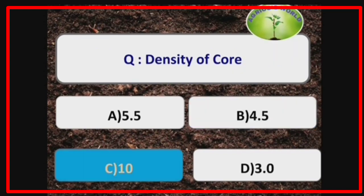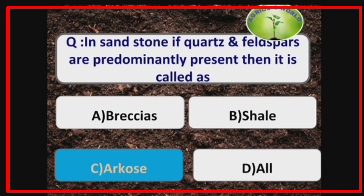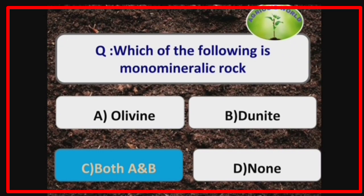The outermost layer of earth composed of soil and subject to soil formation processes is the Pedosphere. Density of the core is 10 megagrams per meter cube. In sandstone, if quartz and feldspar are predominantly present, it is called Arkose. Olivine and Dunite are monomineralic rocks.